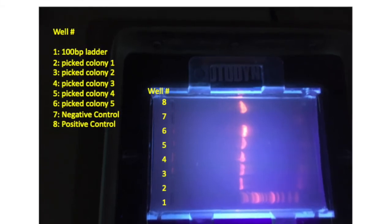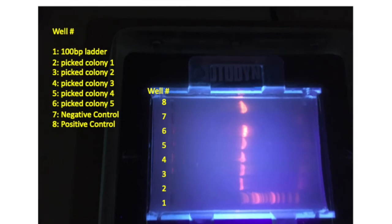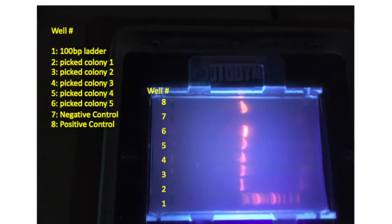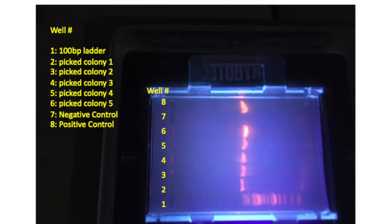Lanes 7 and 8 on this gel are a negative control and a positive control respectively. And you can see that all of the five picked colony samples yielded very good amplification. So all five of those samples could be sent for Sanger sequencing.